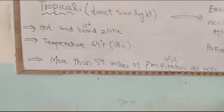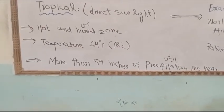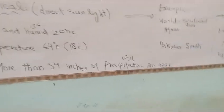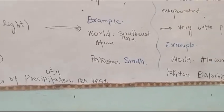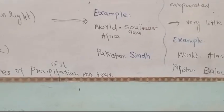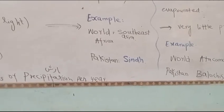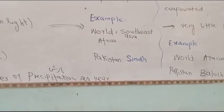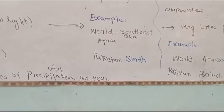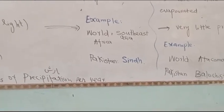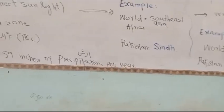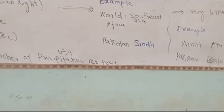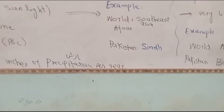Students can see the tropical zone in the world — in which areas it is found. I am going to show you an example. This example is a tropical region in the world, found in Africa and South East Asia. South East Asia is one place, and Africa is another. In Pakistan, there is also a tropical region — the area of Sindh, Pakistan, is in the tropical region.